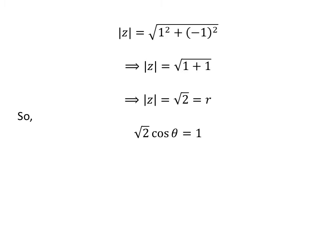As we know, r times cosine of theta equals 1, so square root of 2 times cosine of theta equals 1. Dividing the above equation by square root of 2 gives us cosine of theta equals 1 upon square root of 2.